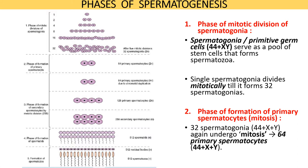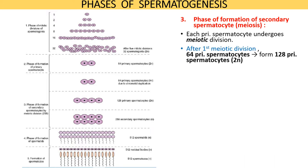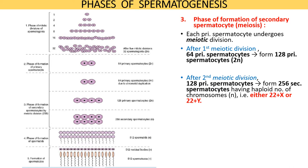The third phase of spermatogenesis is the formation of secondary spermatocytes. Each primary spermatocyte undergoes two meiotic divisions. After the first meiotic division, the 64 primary spermatocytes become 128 cells with diploid number of chromosomes, that is 44XY. After the second meiotic division, these form 256 secondary spermatocytes that have half the number of chromosomes — 50 percent will have 22X and 50 percent will have 22Y chromosomes.